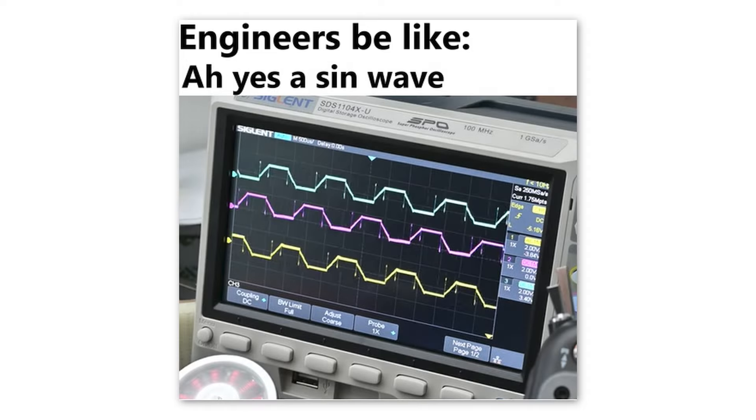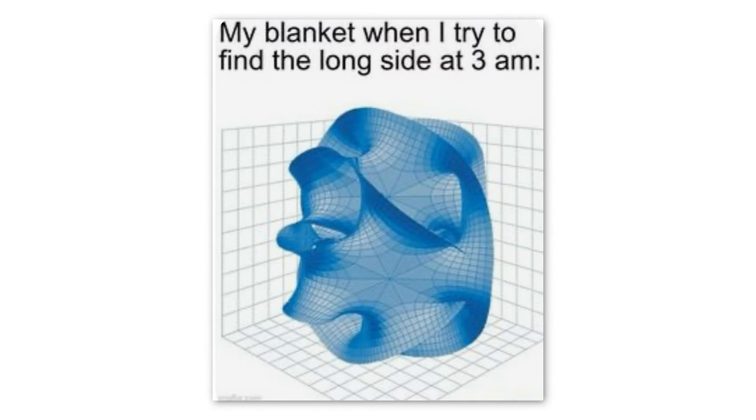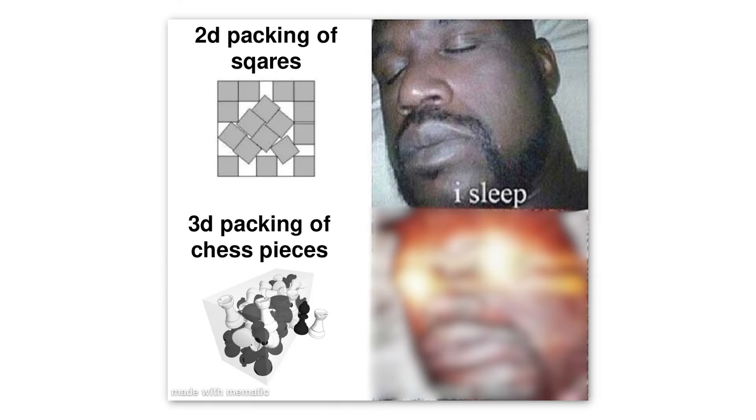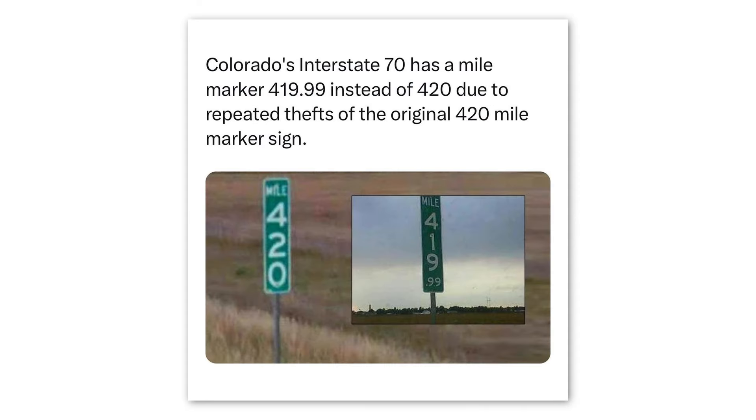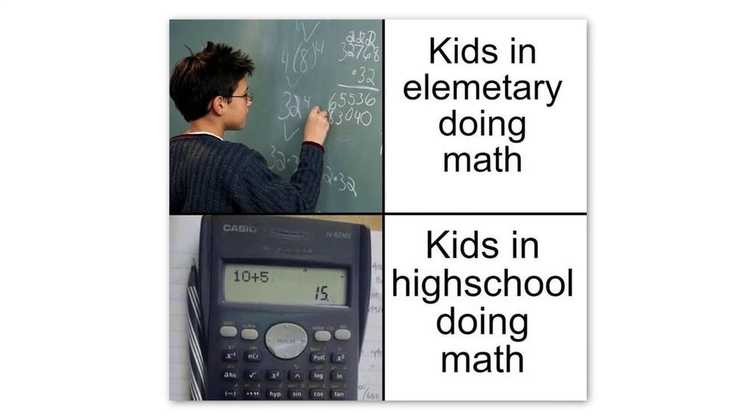Engineers be like, ah yes, a sine wave. Coulomb. Newton. Coulomb. My blanket when I try to find the long side at 3am. Optimal packing of 17 squares. Suboptimal packing of 17 squares. 2 d-packing of squares. I sleep. 3 d-packing of chess pieces. Real shit. Colorado's interstate. 70 has a mile marker 419.99 instead of 420 due to repeated thefts of the original 420 mile marker sign. Kids in elementary doing math. Kids in high school doing math.